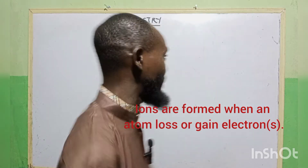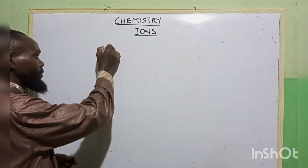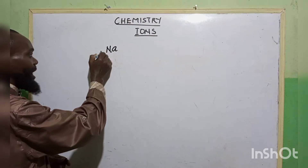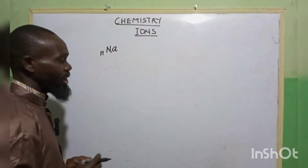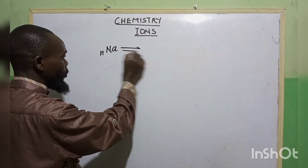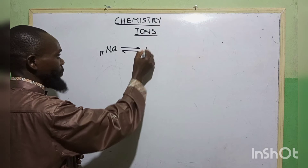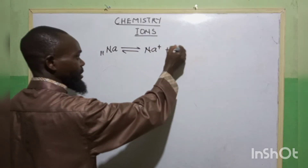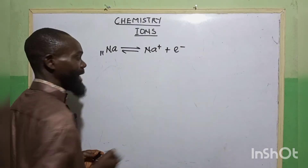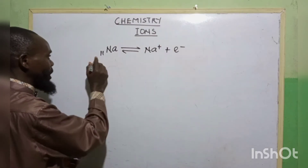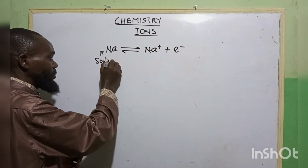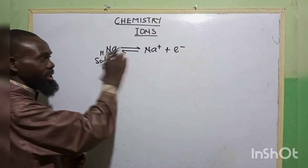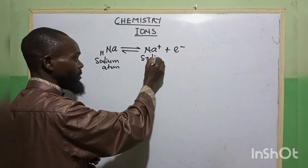For instance, sodium with an atomic number of 11 can lose an electron, which gives us Na⁺ plus one electron. This one is called the sodium atom, while the other, which has lost an electron, forms the sodium ion.